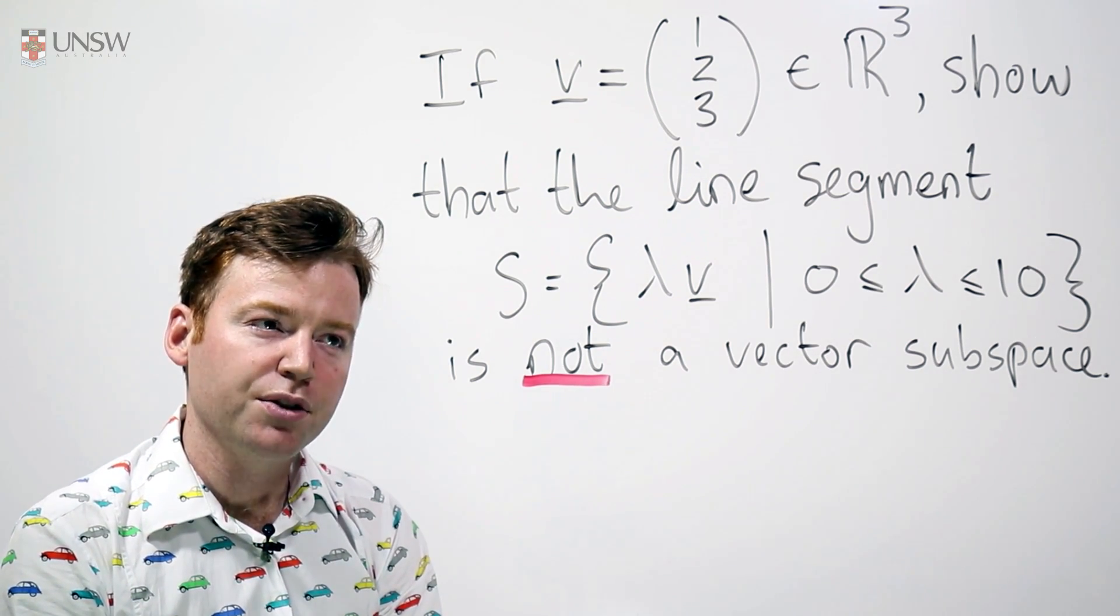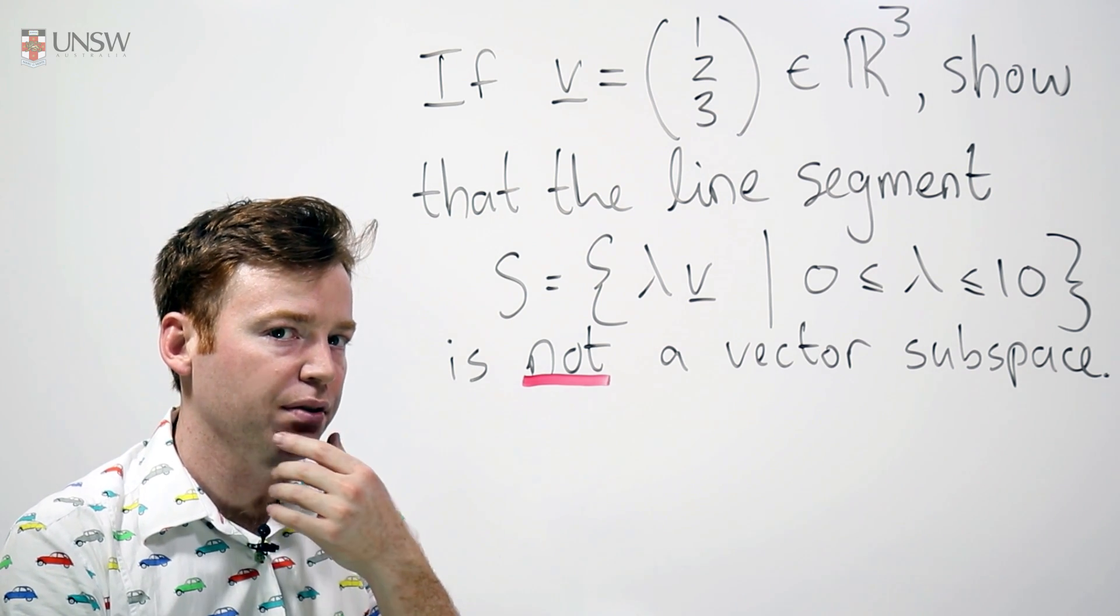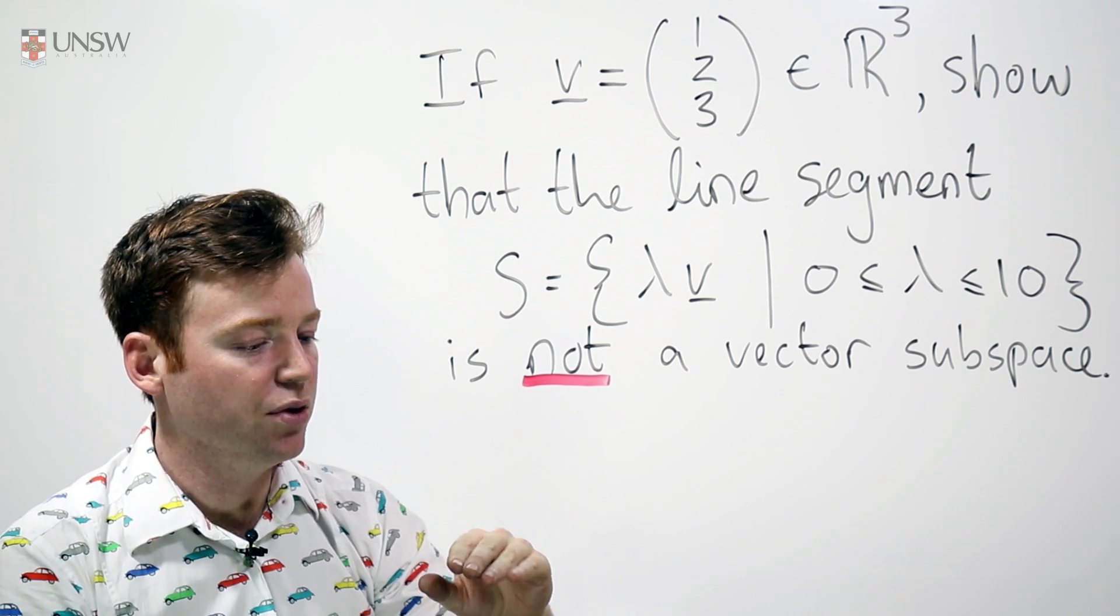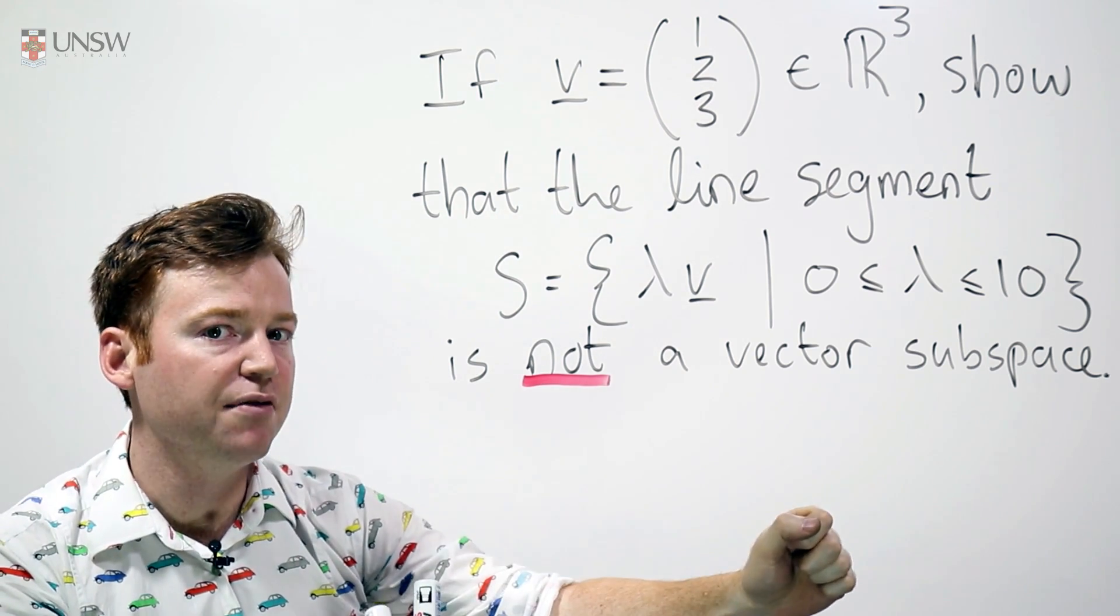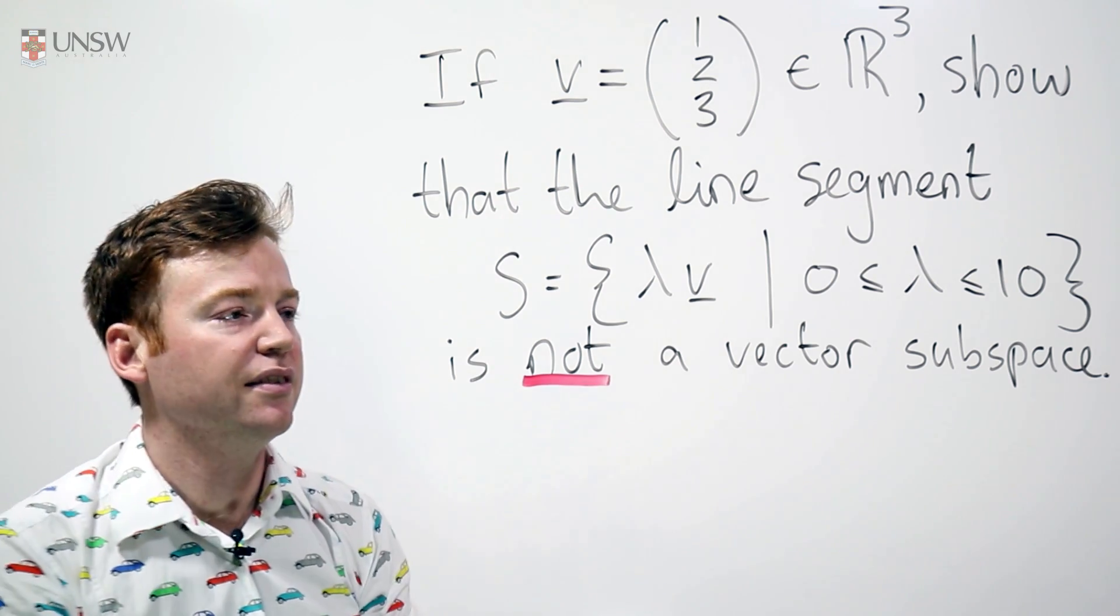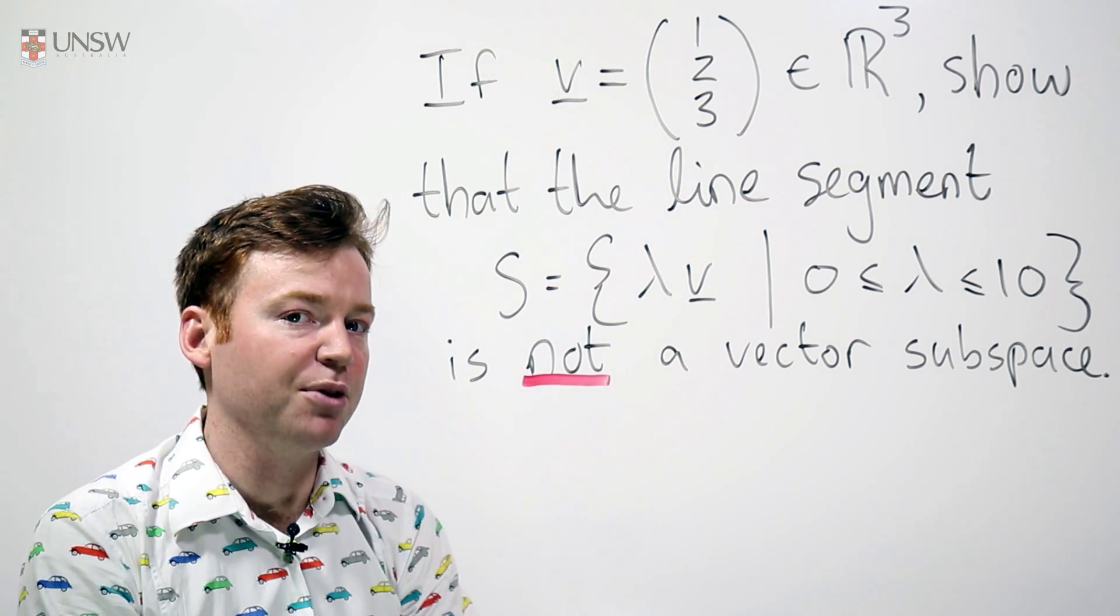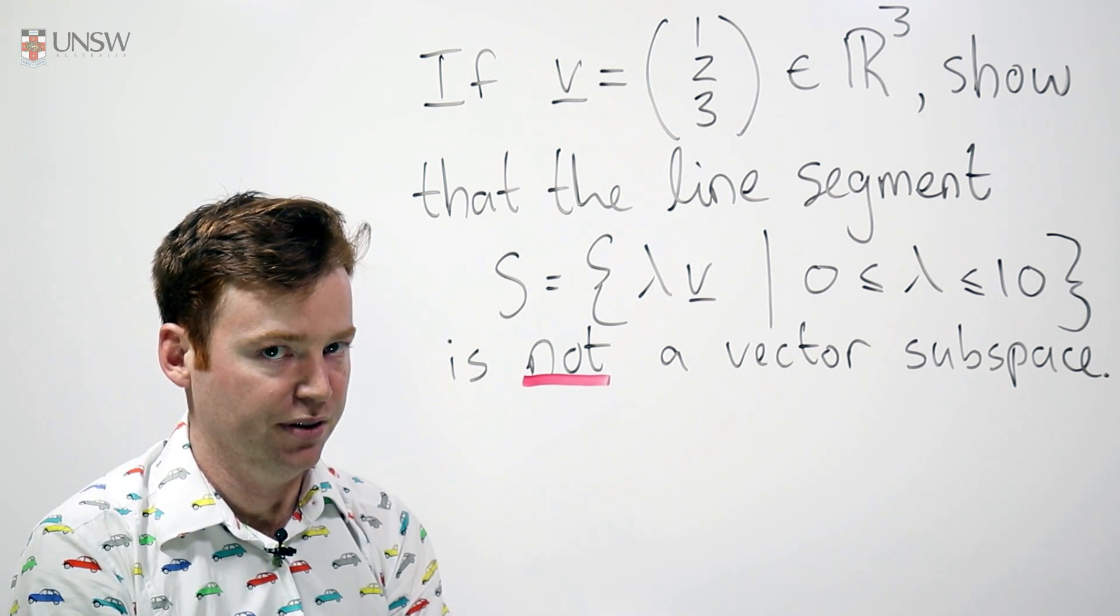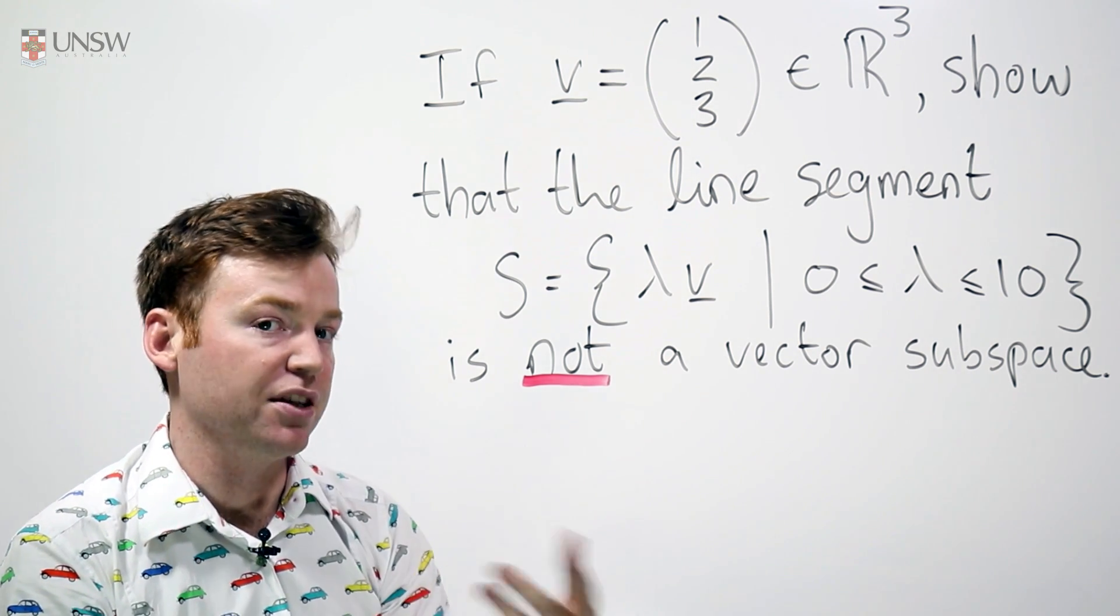What about closure under scalar multiplication? I know I can go from V all the way out and stretch that out to 10V, but I can't go to 11V. And that's how I'm going to show that this set is not closed under scalar multiplication and thereby is not a vector space.